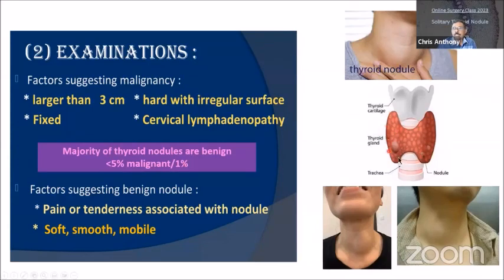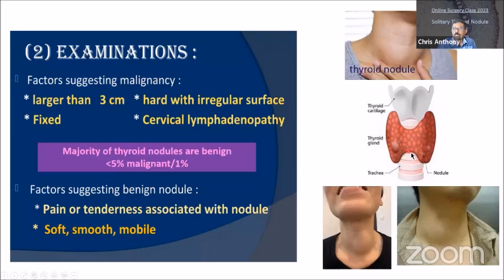This picture shows the nodule. Sometimes you get what appears to be a solitary nodule, but when you do an ultrasound there are multiple nodules. The nodule can occur anywhere — right lobe, left lobe, or in the isthmus.